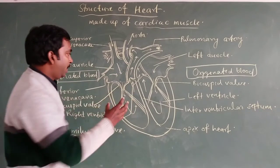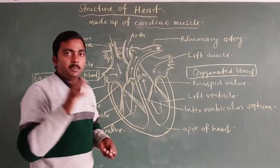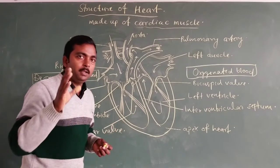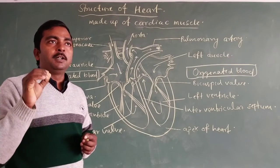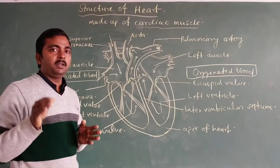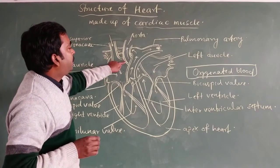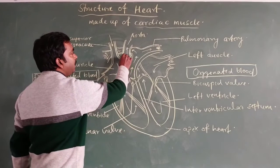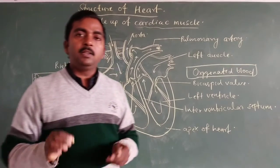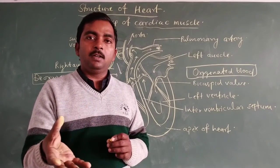The semilunar valve prevents the backward flow of blood from the artery into the ventricle during ventricular relaxation or dilation. This valve also prevents backward flow during ventricular contraction. The valve is responsible for ensuring blood flows in only a single direction, preventing flow in the backward direction.